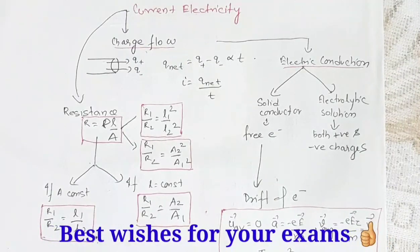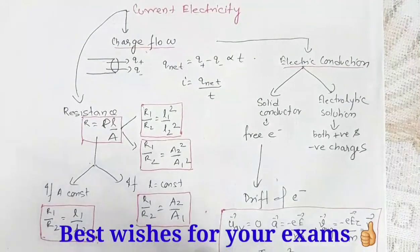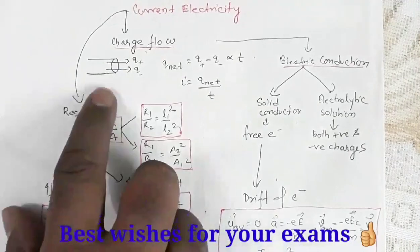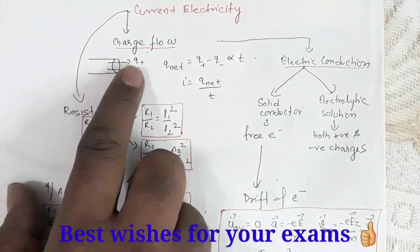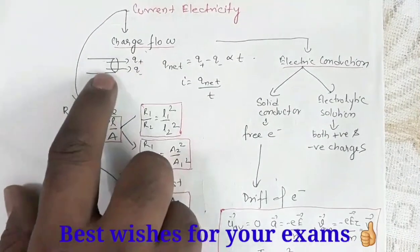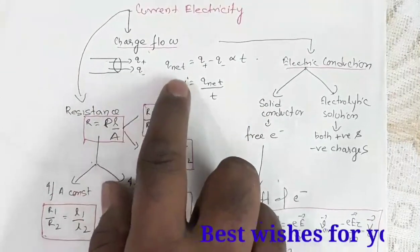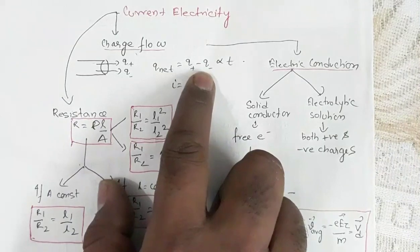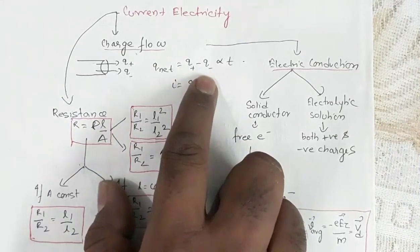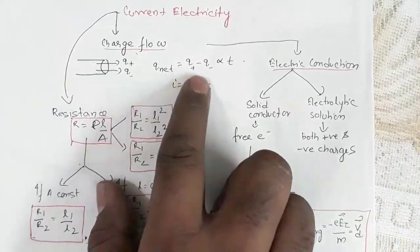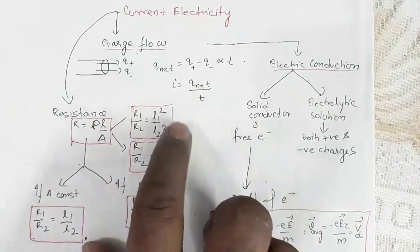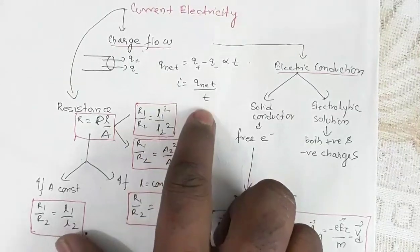Hi students, in this video we are going to quickly revise the topic current electricity. We know that electricity is the rate of flow of charge. If we have a cross-section through which Q+ and Q- charges are both flowing in the same direction, then Q_net = Q+ minus Q-. If this is a steady current, Q_net is proportional to time, and the proportionality constant is current: I = Q_net / T.